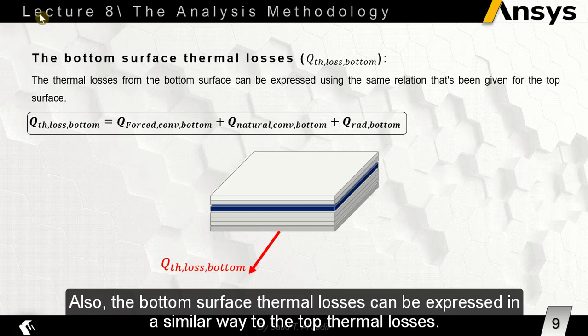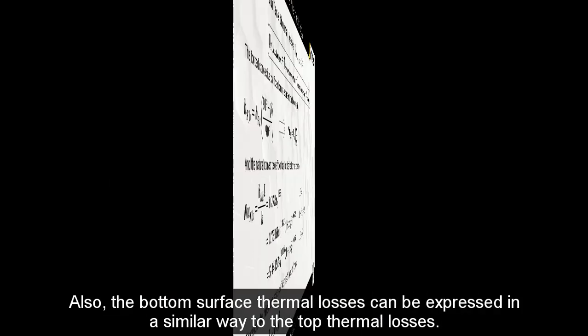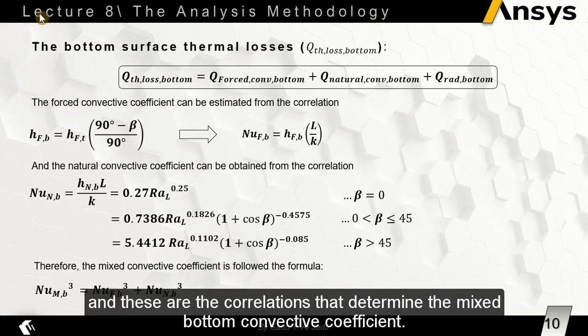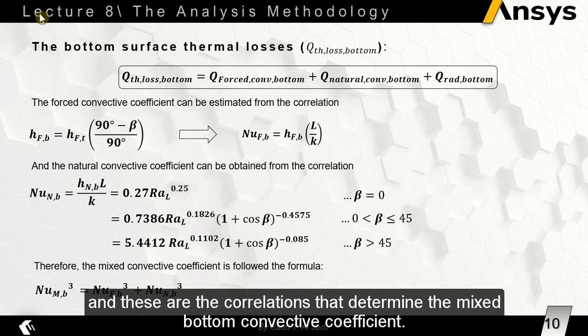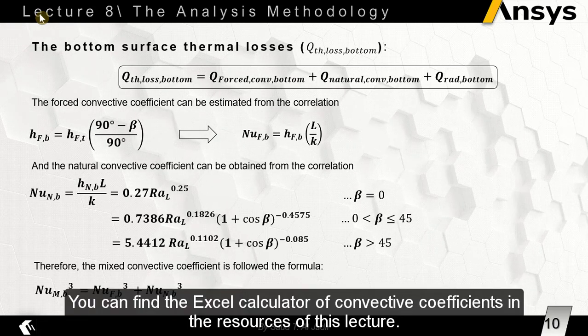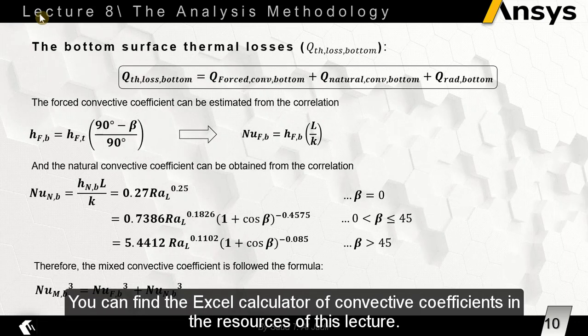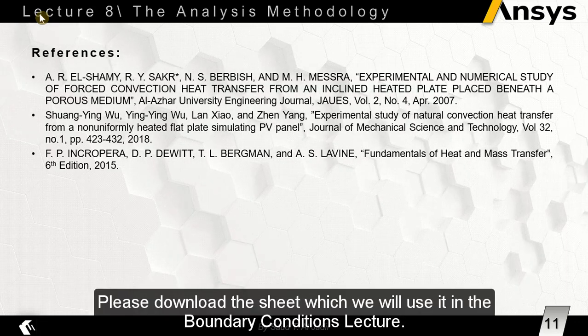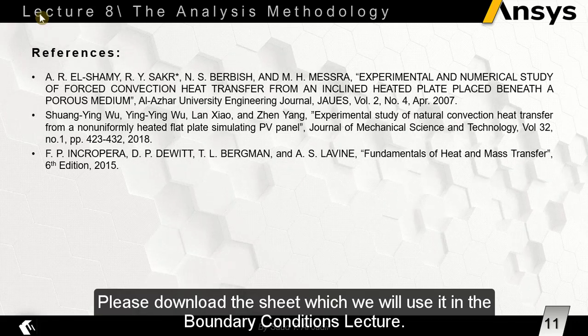Also, the bottom surface thermal losses can be expressed in a similar way to the top thermal losses. And these are the correlations that determine the mixed bottom convective coefficient. You can find the Excel calculator for convective coefficients in the resources of this lecture. Please download the sheet which we will use in the boundary conditions lecture.